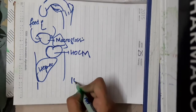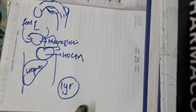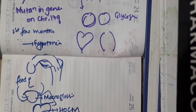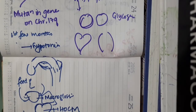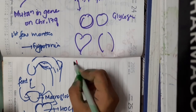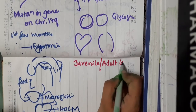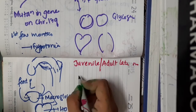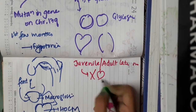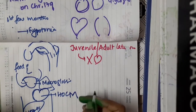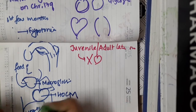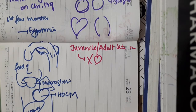Usually, these infants die by one year of age. There is one variant of Pompe disease which is a less severe form, called the juvenile or adult onset — late onset — Pompe disease. In this form, there are no severe cardiac manifestations and there is a less severe short-term prognosis.